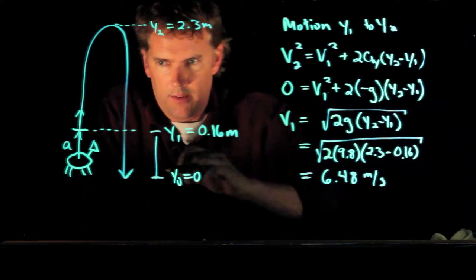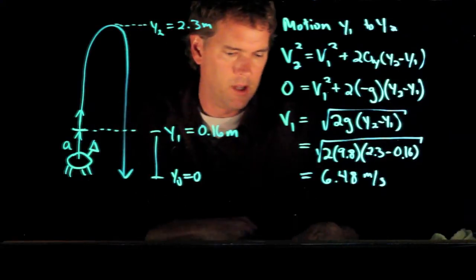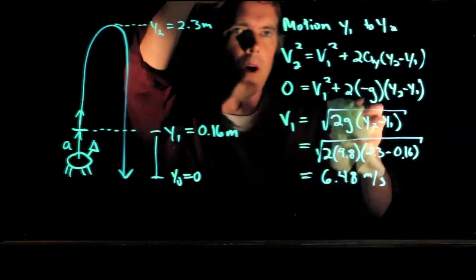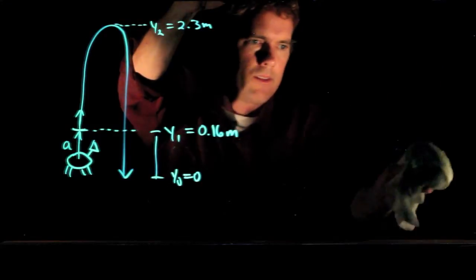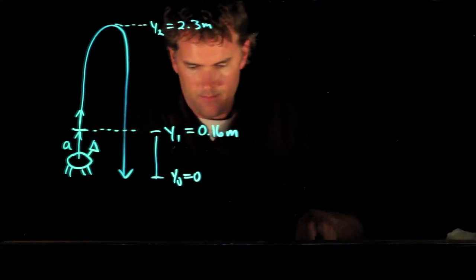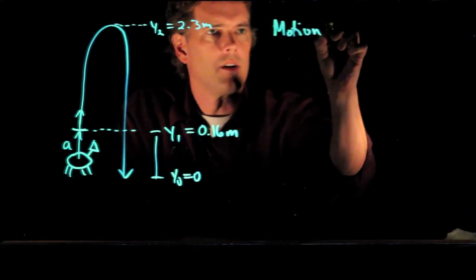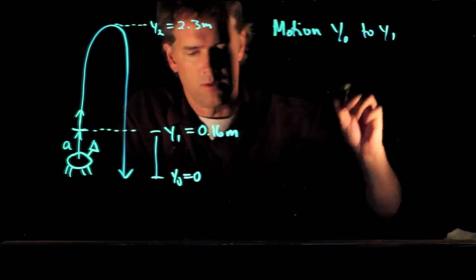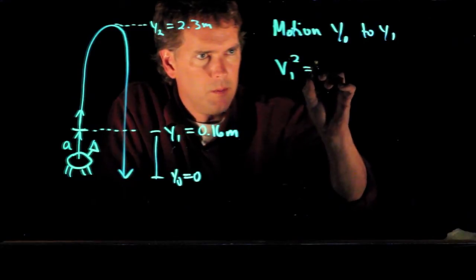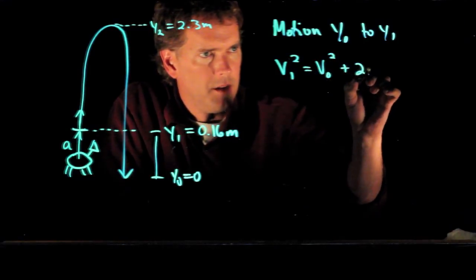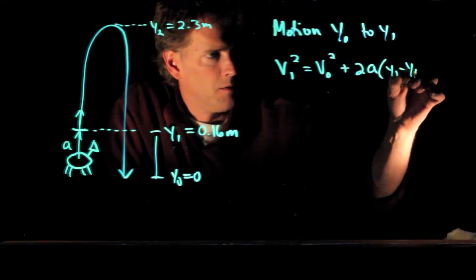Okay, so now let's consider this motion where they're starting on the ground and their legs are extending up until they get to this height y1, so going from y0 to y1, what can we say? Well we can use the exact same equation: v1² = v0² + 2a(y1 - y0).